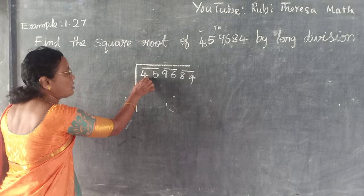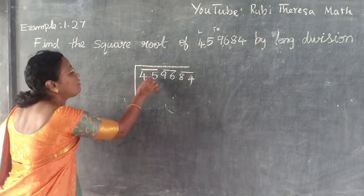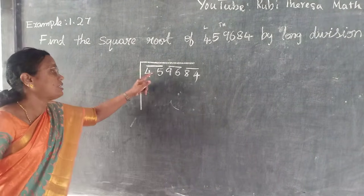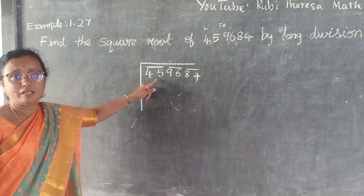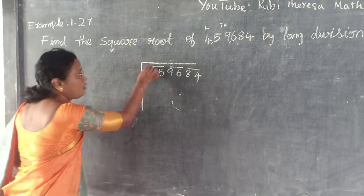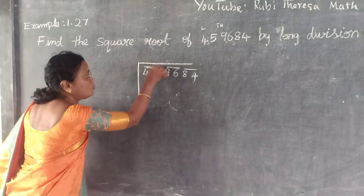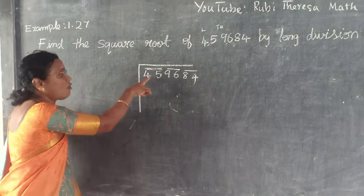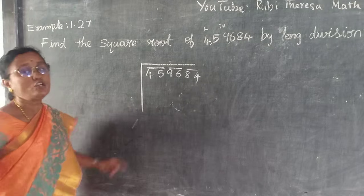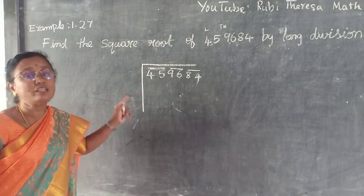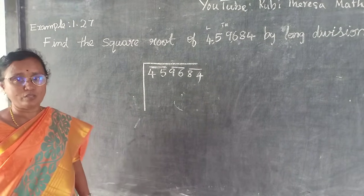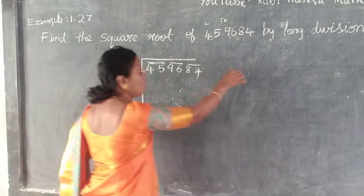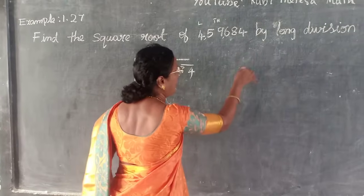What is the first number you are getting? 45. What is the number you are getting? 45. Understand? Here you are getting 2 — sometimes you get 1 also. Understand? Here 45, so you should know the numbers. Those who don't know, just recall.